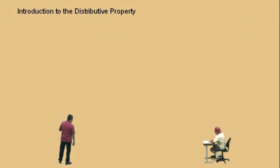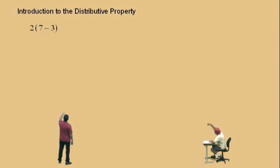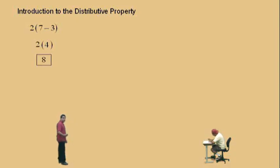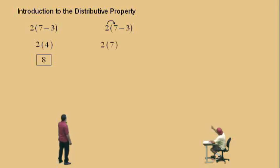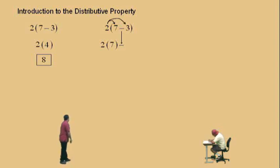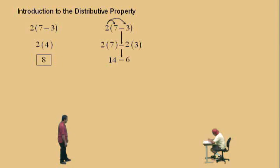Now let's look at a subtraction problem in the parenthesis. Let's do the parenthesis first — what's 7 subtract 3? 4. And multiplying by 2 gives you 8. Now let's apply the distributive property. Distribute: 2 times 7 is 14. Your operation is subtraction, bring that down, and then 2 times 3 is 6. 14 subtract 6 is 8 — same answer.